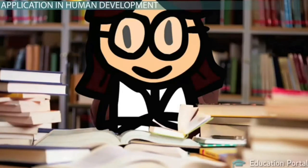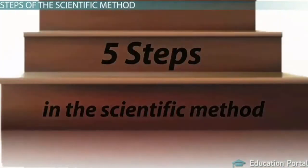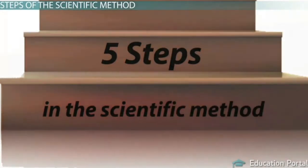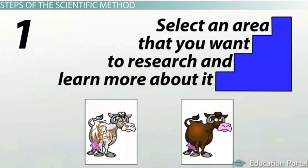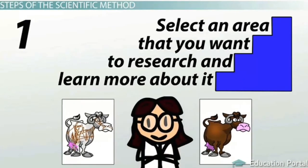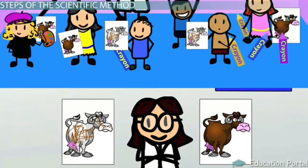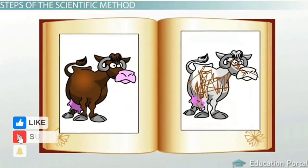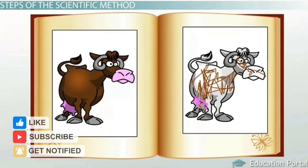In order to understand how researchers reach these conclusions, let's look more closely at the research process itself and the basic steps used to conduct research. We are going to discuss five steps involved in the scientific method. First, you will select an area that you want to research and learn more about — this may begin in a simple way, like making an observation. Then you have to learn what information already exists about the topic, like the researcher in our example who noticed girls coloring better and then researched existing information related to her observation.